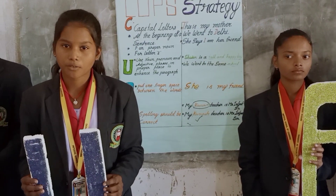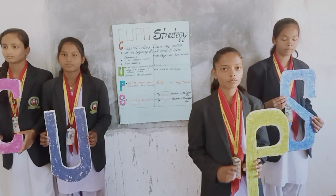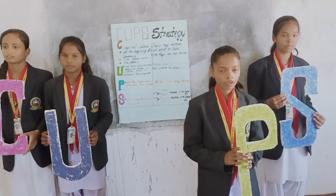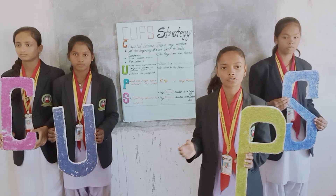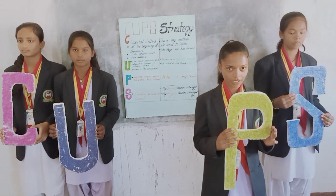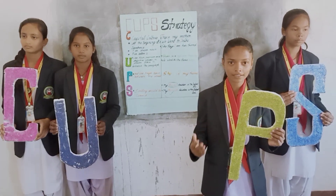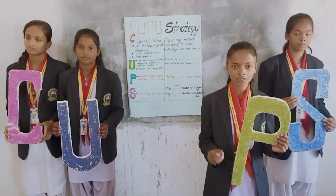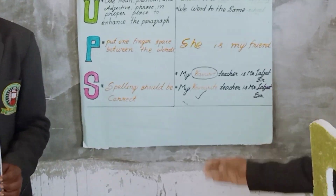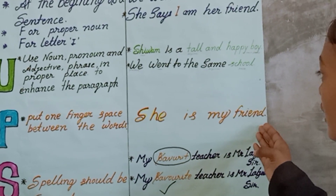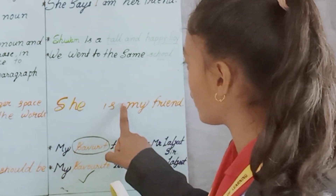For next, my friend the P component is here. My name is Deepakmari and I read in class 6A. We are here to learn writing skills in English by the help of the CURPS strategy. I am here as the P component. As you know, before writing any word or sentence, we must put one finger space between the words. You can see this sentence: 'Sivam is my friend.' The words in this sentence are spaced with one finger space between them.